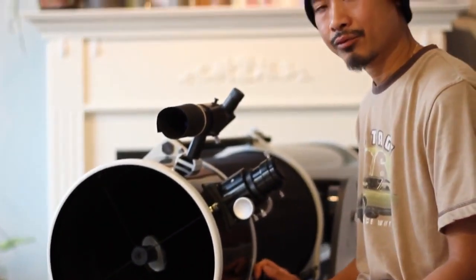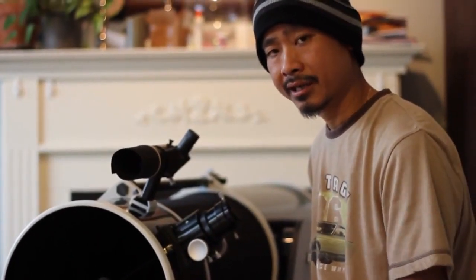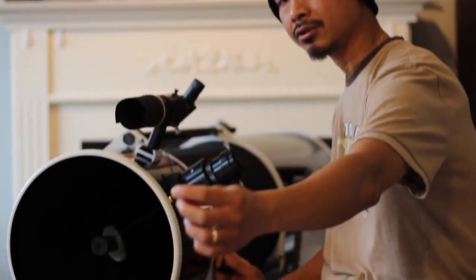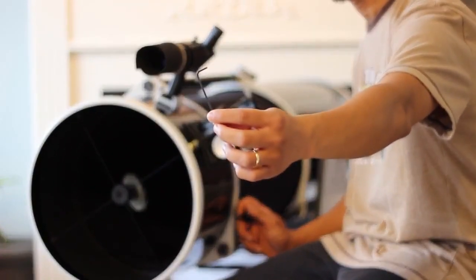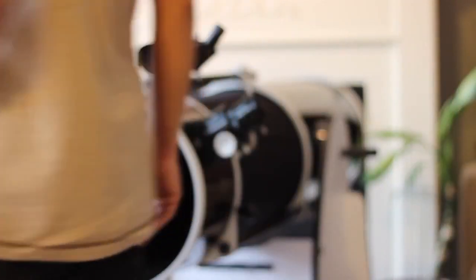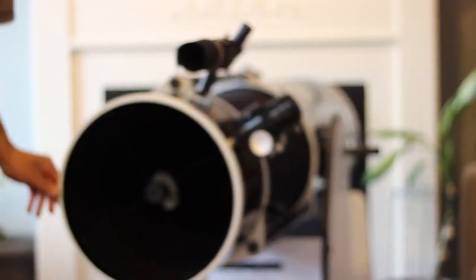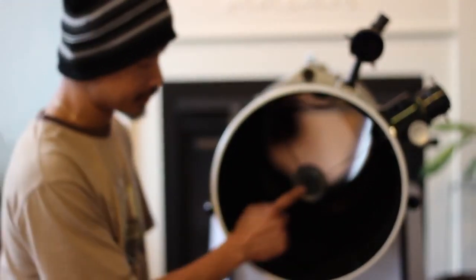So in this next step, we are going to be aligning the secondary mirror with the primary mirror and we're going to need to use an Allen key tool. And to make these adjustments, there are three head screws on top of the spider.